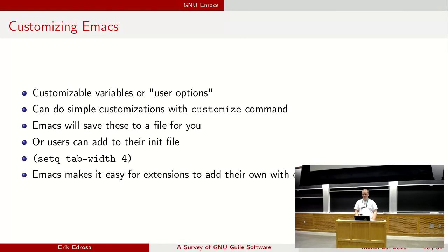And then how to customize Emacs. A lot of extensions also provide ways to customize the behavior of the software. These are often called customizable variables or user options. You could do simple customizations with the 'customize' command, which is a user interface for customizing behavior. Emacs will also prompt you to save these files so you can persist sessions. More commonly, users edit their init file, which gets loaded when Emacs starts. As an example, here is 'tab-width,' which we set to 4. Emacs also provides a way for extensions to add their own defaults with 'defcustom,' and these are viewable in the customize command UI.